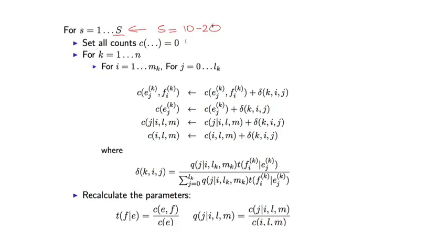At each iteration, we first set all of our counts equal to zero. At the end of the iteration, we're going to recalculate the T and Q parameters based on the counts that we calculate. And in this middle portion, I'm going to describe how the counts are actually calculated.